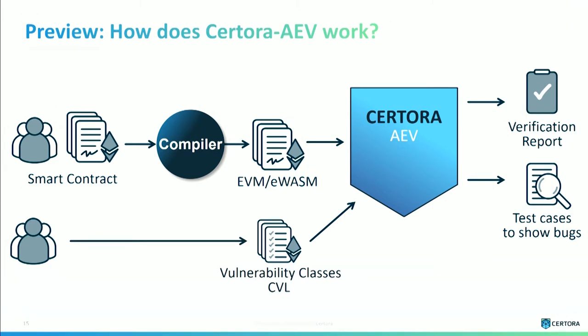Let me explain how the technology works. On one side we have our technology — we run the compiler and compile the smart contract into the EVM. On the other side, the programmer writes the CVL. The technology then either gives you a verification report telling you the vulnerability does not exist, or gives you the exact vulnerability with a concrete input that demonstrates it.